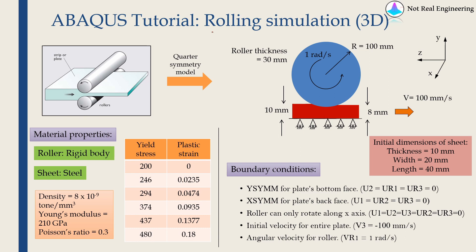Hi everyone, welcome to a new video from Nottrell Engineering. Today we are going to see how to perform rolling simulations using Abacus. Rolling is one of the most widely used manufacturing processes where a metal sheet is pushed through two rotating rollers in order to reduce its thickness. When the thickness is reduced, the width of the sheet will increase a little bit, and this is a permanent deformation.